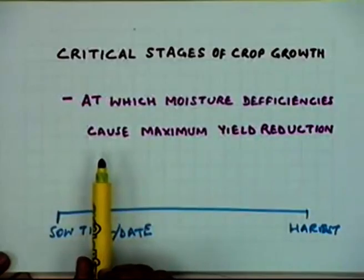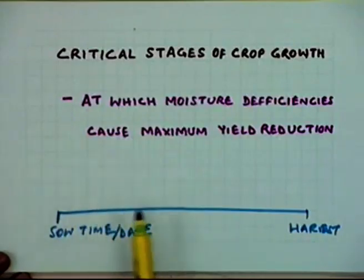Just as the sensitivity of crops as a whole varies from one crop to another, for each individual crop within its growth period there are stages more critical than others. Knowledge of which stages are most critical is essential when you want to schedule irrigation - to know when to irrigate requires knowing which are the critical stages and when they occur during the growth period.